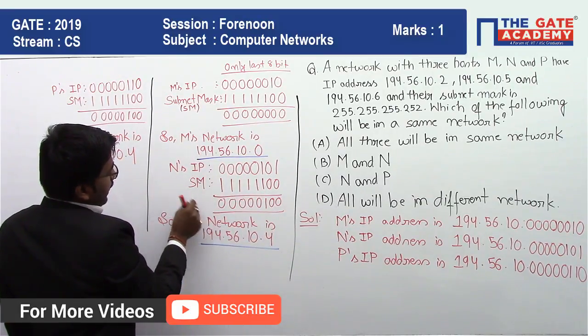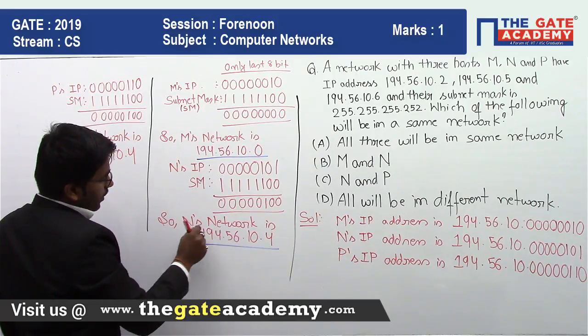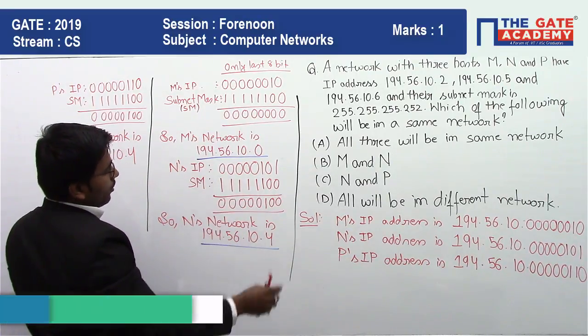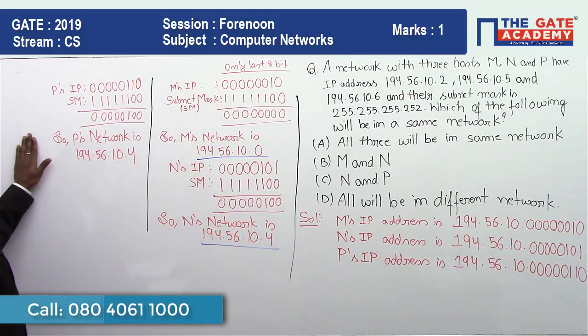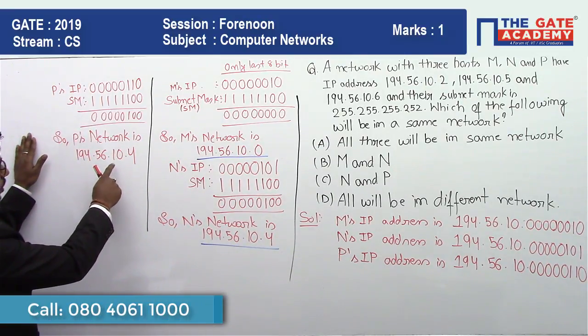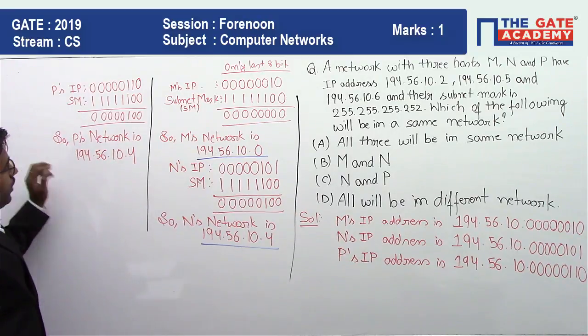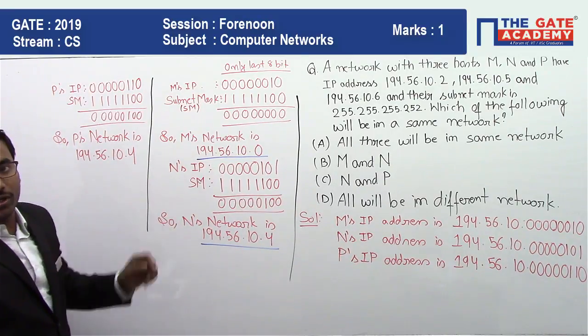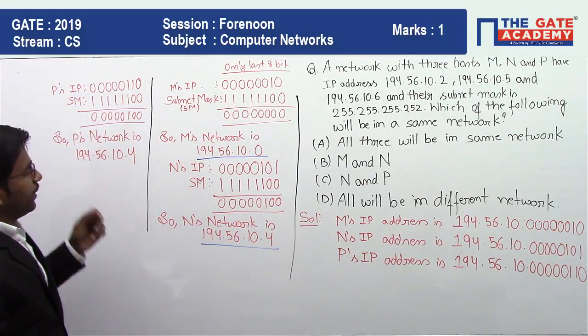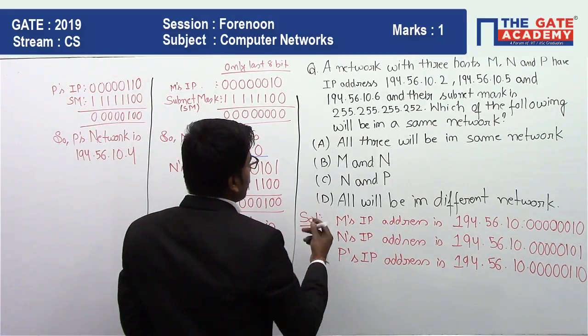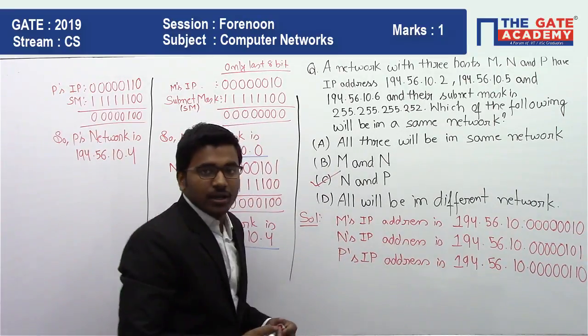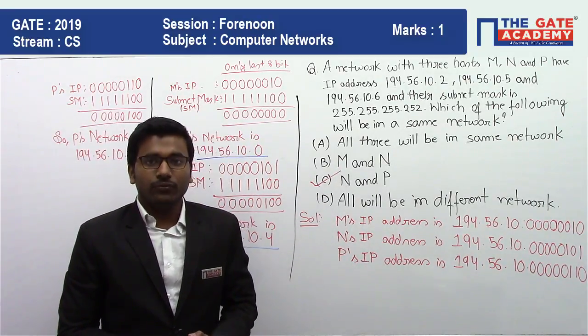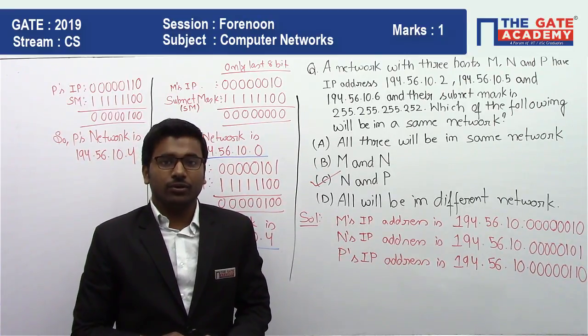Similarly for N we found out that N network is 194.56.10.4. And similarly for P, here we got 194.56.10.4. These two are having same network. So N and P will be in same network, so option C is the correct option. Hope you liked the video, don't forget to like and share with your friends. Thank you.